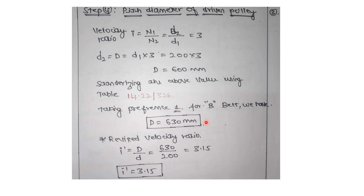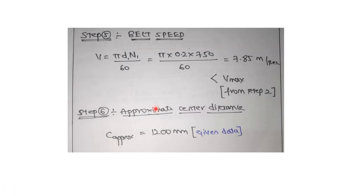Once you have the standardized driving and driven diameters, calculate the revised velocity ratio because standardization changes the ratio. The revised I' = D/d (standardized D over given small d) = 630/200 = 3.15. Then in step 5, calculate belt speed: V = πd₁n₁/60, which gives approximately 7.85 m/s. Verify that this value is less than Vmax (approximately 25 m/s) from step 2.